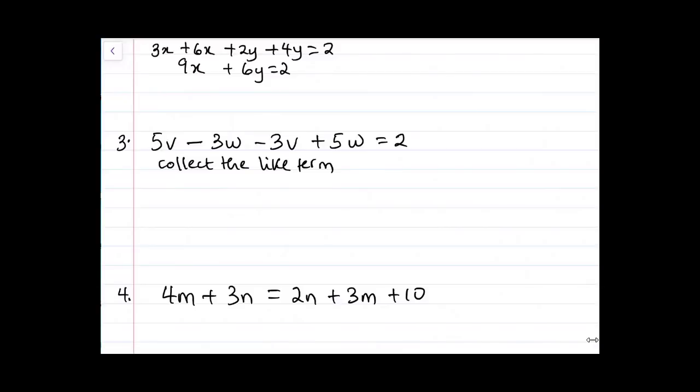So we have 5v. Do we have anything that looks like v? Yes, we do. Minus 3v minus 3w plus 5w equals 2. So now if we take 3v from 5v, it's going to give us 2v. And in this case, we have minus 3w plus 5w.